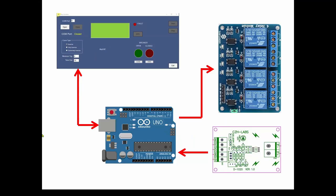Here's a general overview of what we're going to set up. We've got our computer with the software simulator connecting over the COM port to our Arduino. The Arduino is going to have two functions: it's going to send a signal to the relay to open and close it, and it's also going to be receiving data from the current sensor to measure how much current is in the circuit being controlled by the relay.